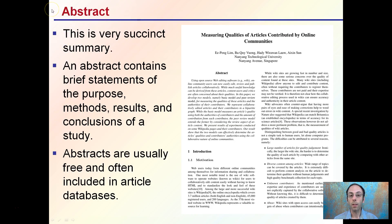This is a very succinct summary, very straight to the point. You can see an example of one right here. An abstract contains brief statements of the purpose, the method, the results, and the conclusions of the study. Abstracts are usually free and often included in article databases.